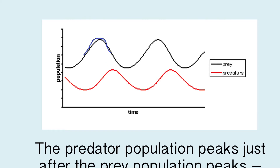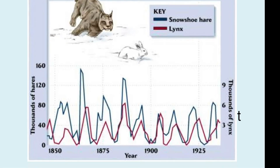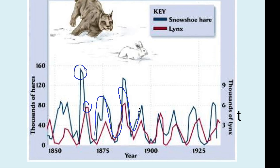After the prey population peaks, a little bit later the predator population peaks. Likewise, the prey population dips back down, and then a little bit later the predator population dips back down. Why does the predator population mimic the prey population but with a delay? A real-life example is the snowshoe hare, which is prey of the lynx — this is well studied. You can see the cyclical nature of population size. Jot down in your notes why you think that is, and why it is cyclical.